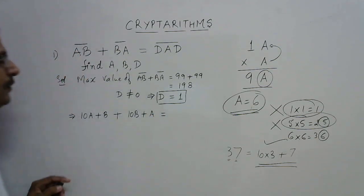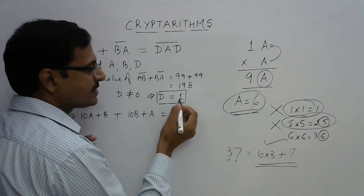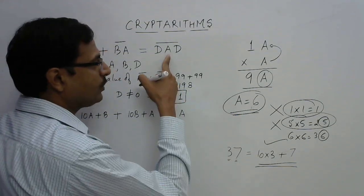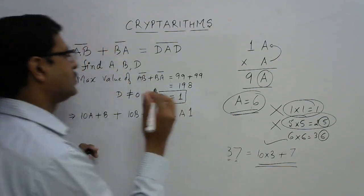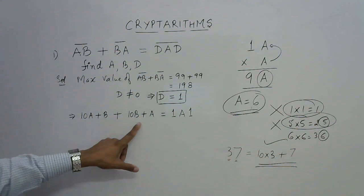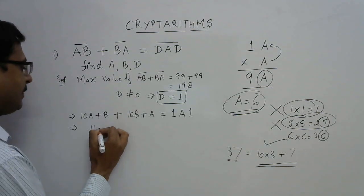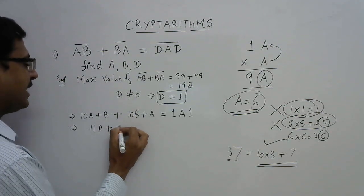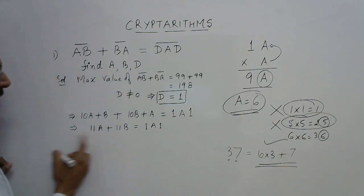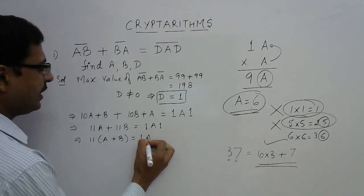Substituting d=1 into the right-hand side, DAD becomes 1a1. Writing the equation: (10a + b) + (10b + a) = 1a1. Combining like terms on the left: 10a + a = 11a, and 10b + b = 11b. So the equation simplifies to 11(a + b) = 1a1.